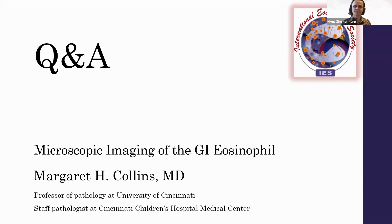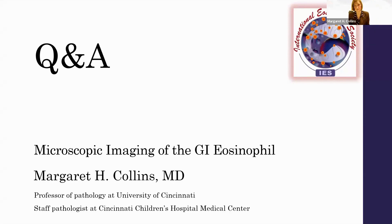Another question: do you think the threshold for diagnosis of eGIDs differs in children and adults? Not in the esophagus. Maybe in the rest of the GI tract — that's a very good question we'll keep in mind as we construct criteria for the adult stomach and duodenum. There is an effort now to do that, and we will try to determine if there's a reason to think the numbers differ, making comparisons between the pediatric and adult work.